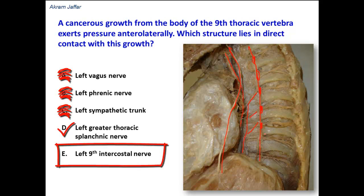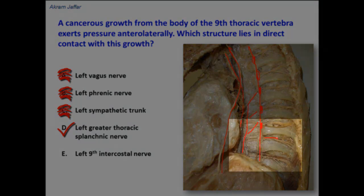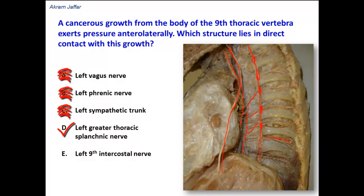The left 9th intercostal nerve is the anterior primary ramus of the 9th thoracic spinal nerve. It passes in the intercostal space on the lateral side of the vertebral body. The intercostal nerve arises from the intervertebral foramen, which is located behind the body of a vertebra.